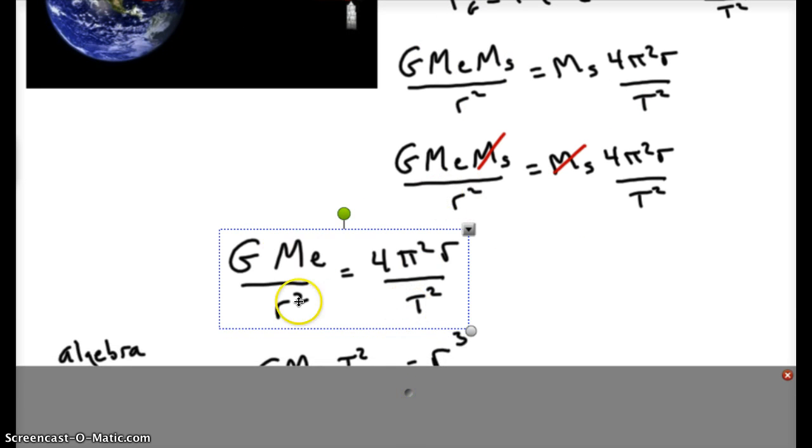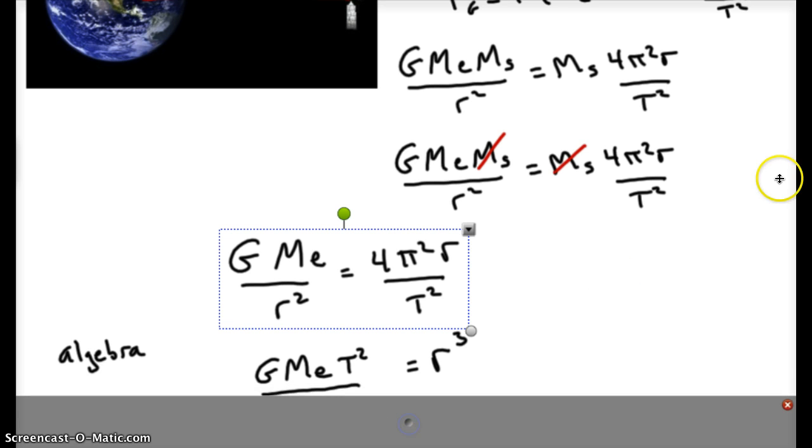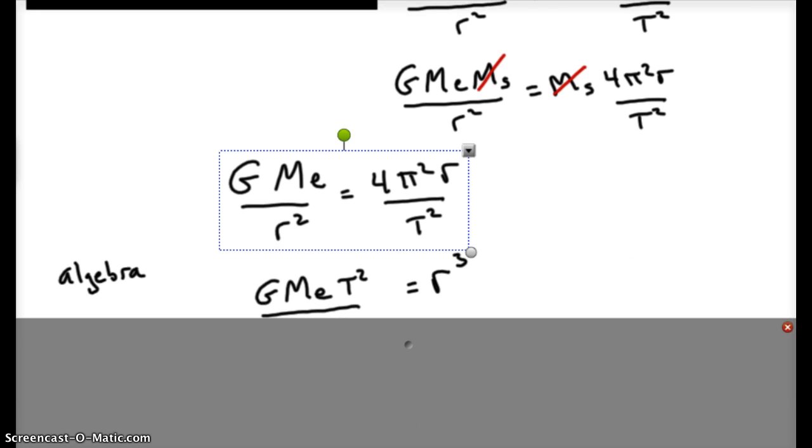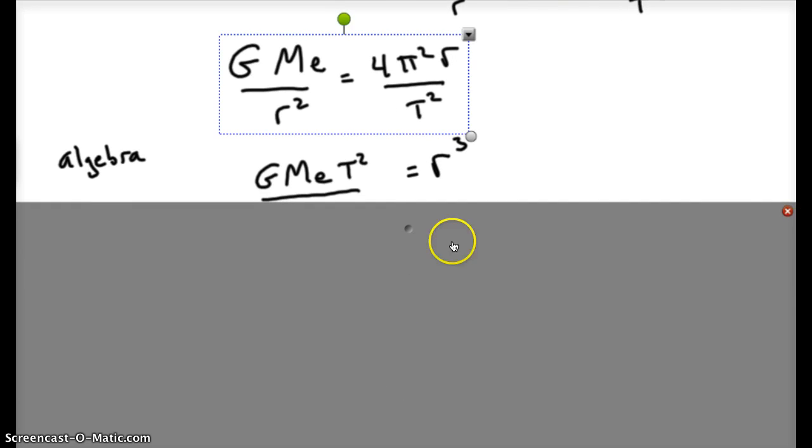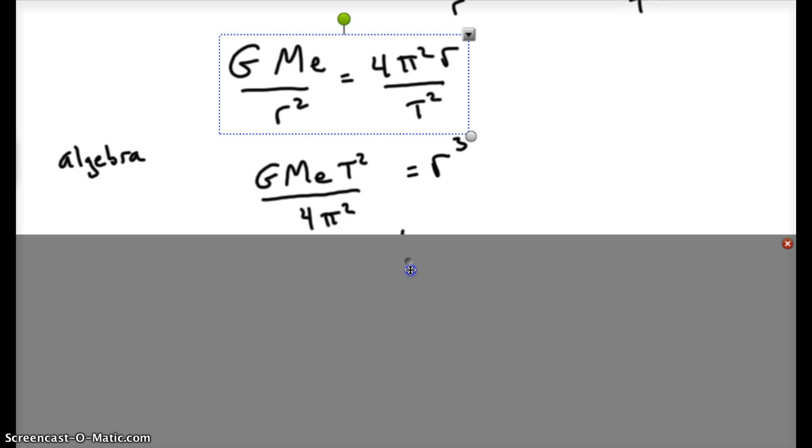We're left with G mass of the Earth over the distance between them squared equals 4π² r over T². All right, now we've got algebra to do, and I will save you the steps of the algebra. You should be able to follow through and do those. If you multiply both sides by T², multiply both sides by r², and then divide by 4π², that should get you to this expression.